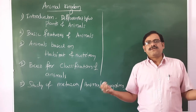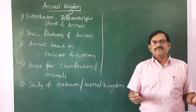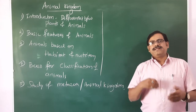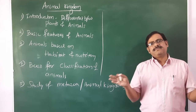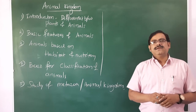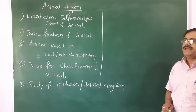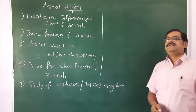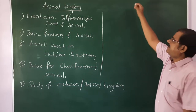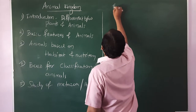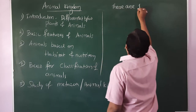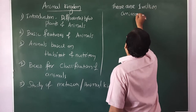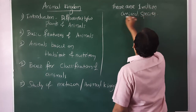Human greed — for food, for space — is causing a variety of other species to become endangered and ultimately extinct. So let us understand the animal kingdom. Before that, let us understand what kinds of animals exist: on record there are nearly one million animal species so far documented.